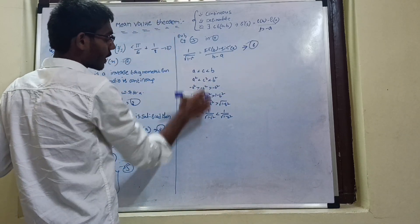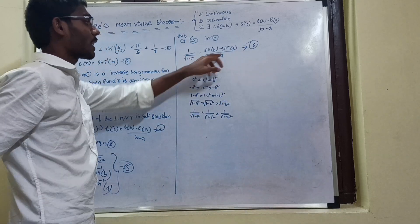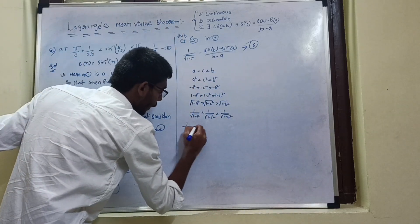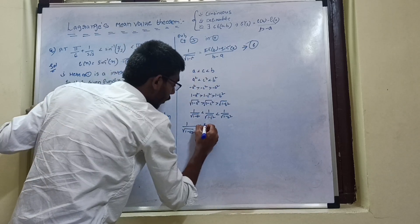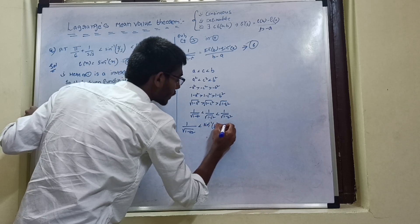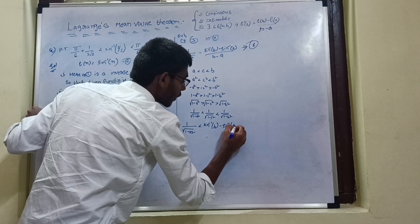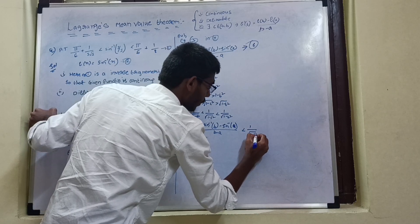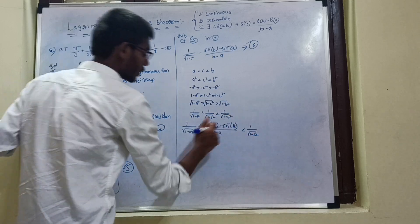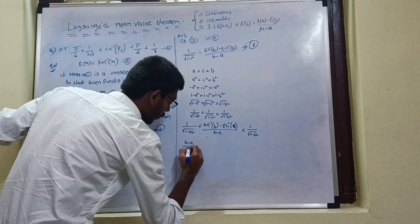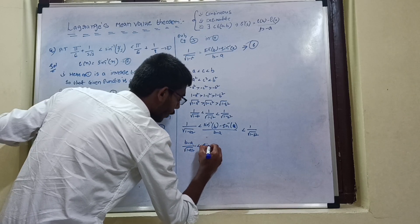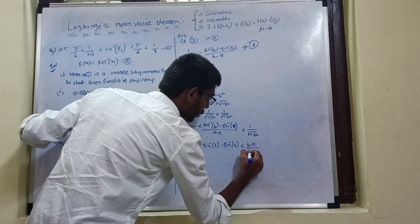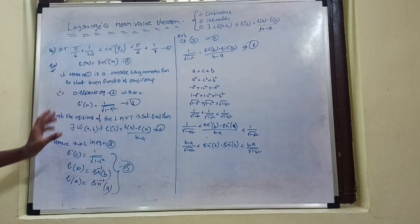Since 1/√(1 − c²) = [sin⁻¹(b) − sin⁻¹(a)] / (b − a), substituting the inequality gives: 1/√(1 − a²) < [sin⁻¹(b) − sin⁻¹(a)] / (b − a) < 1/√(1 − b²). Multiplying through by (b − a): (b − a)/√(1 − a²) < sin⁻¹(b) − sin⁻¹(a) < (b − a)/√(1 − b²).